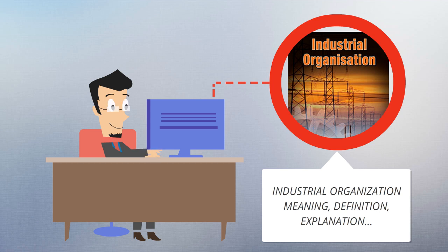Industrial organization adds real-world complications to the perfectly competitive model, complications such as transaction costs, limited information, and barriers to entry of new firms that may be associated with imperfect competition. It analyzes determinants of firm and market organization and behavior as between competition and monopoly, including from government actions.